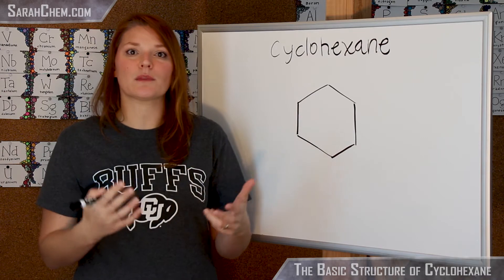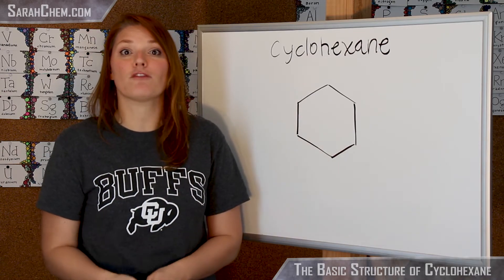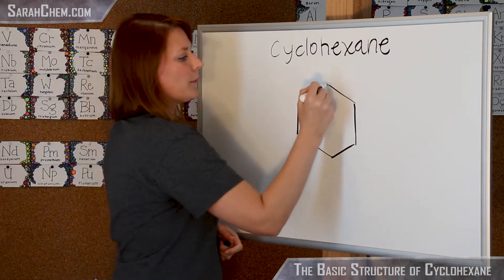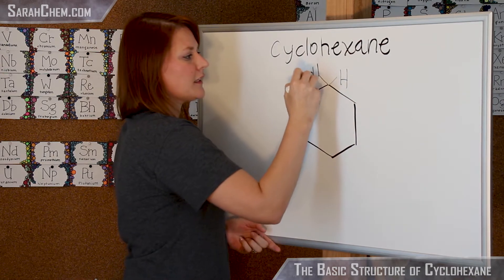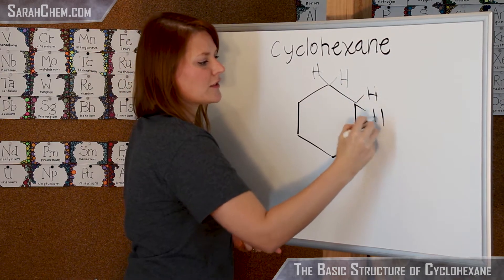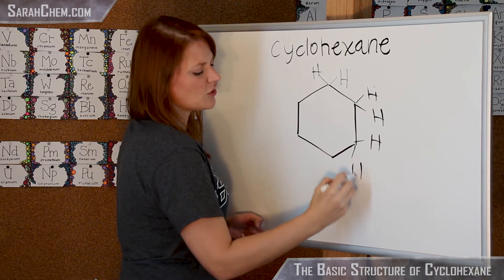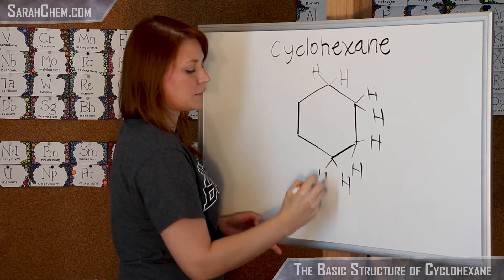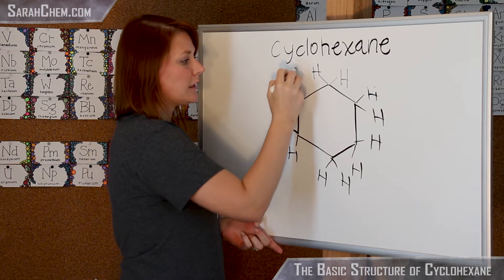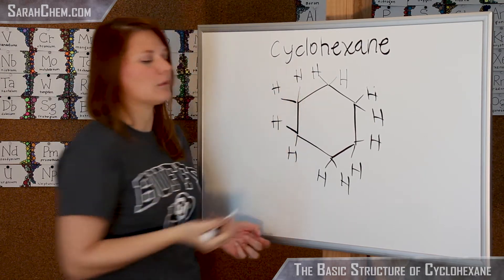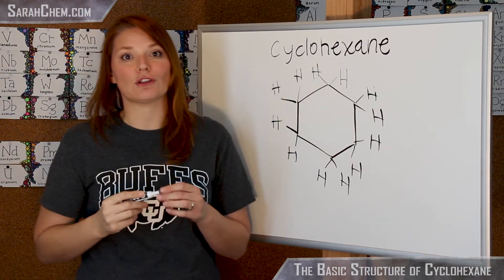Now sometimes this structure can seem a little strange because carbon likes to have four bonds and in this case we're only seeing two. But remember that on each of these carbons we're going to have two hydrogens that are implied. Usually just to make the structure not seem so messy, they will exclude them in textbooks to make it a little bit cleaner. But this is what it would overall look like.